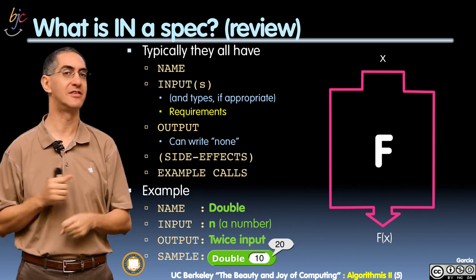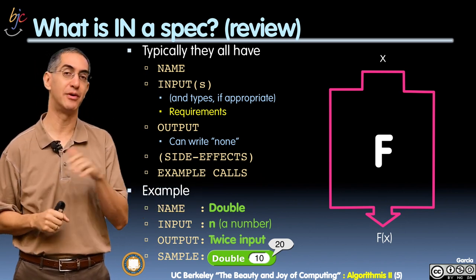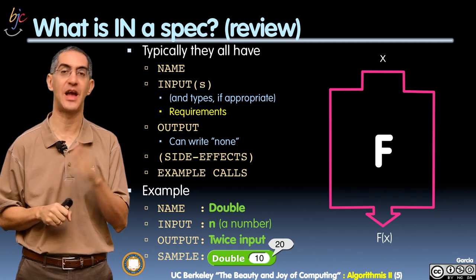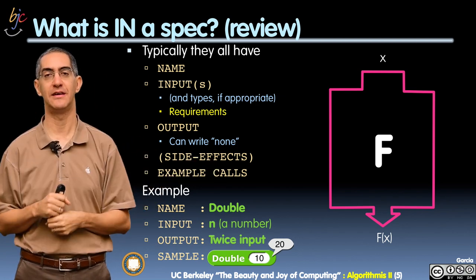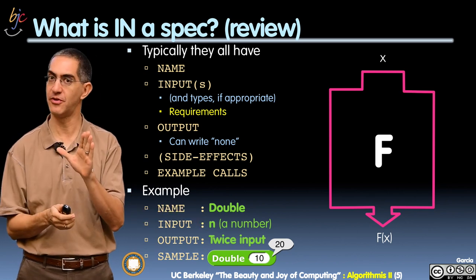So here's an example here. Here's a function double. We saw this last time. The input is n, a number, in case any number. The output is twice the number. And here's an example called double of 10. You see it reports 20. Very simple. So all this is review.